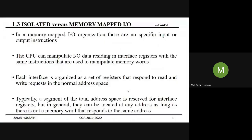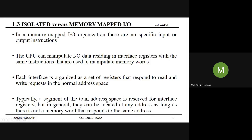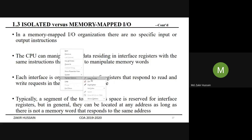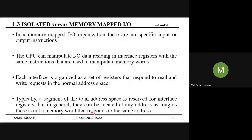The CPU can manipulate I/O data residing in interface registers with the same instructions used to manipulate memory words. Each interface is organized as a set of registers that respond to read and write requests in the normal address space. Typically a segment of the total address space is reserved for interface registers, but in general they can be located at any address as long as there is not a memory word that responds to the same address.